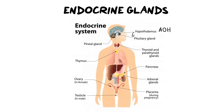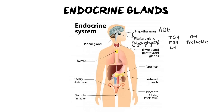Moving on to the pituitary gland, also known as the hypophysis — I'd like everybody to know both names because examiners may ask either one. The pituitary gland is attached to the hypothalamus and secretes many useful hormones, including thyroid stimulating hormone, follicle stimulating hormone, luteinizing hormone, growth hormone, and prolactin, which is the hormone used to create breast milk. Notice that these are all stimulating hormones — they stimulate other structures to make other hormones.